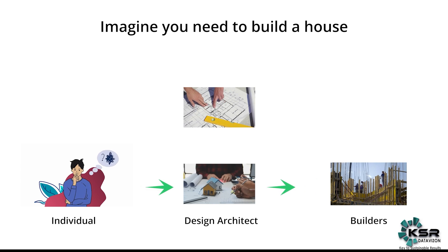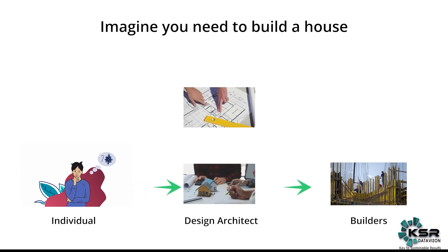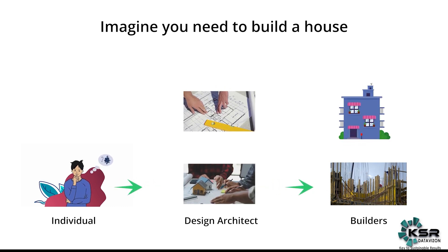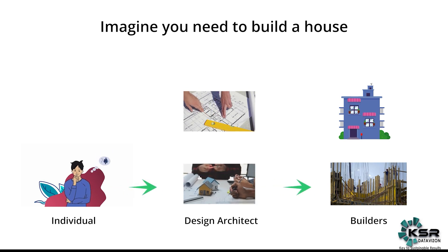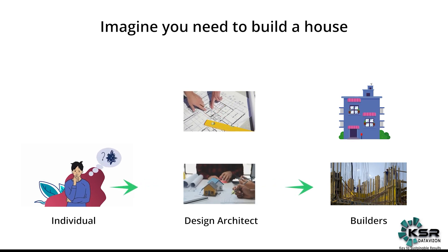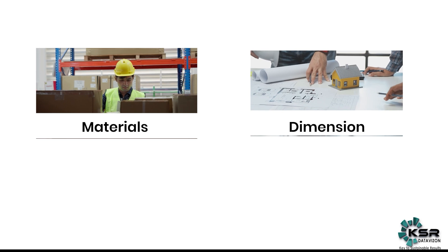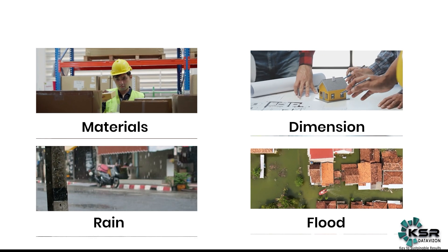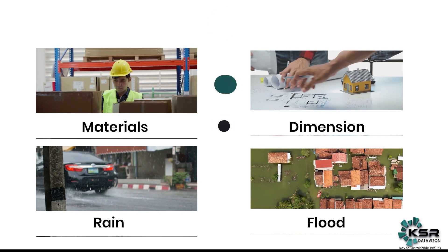The builders will follow this design architect's plan exactly. Whatever plan the design architect has given, the builders go and build exactly that. The design architect also needs to know what type of materials to use, what the dimensions should be, and how to manage situations like rain or flooding — what should be the roof. Every single detail is specified by the design architect, and it is the builders who actually construct it.